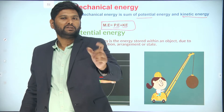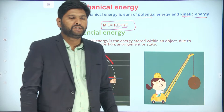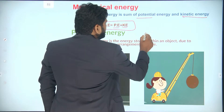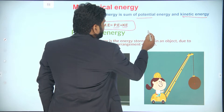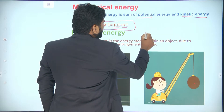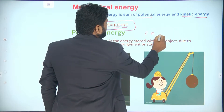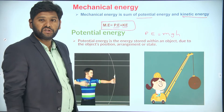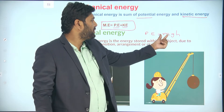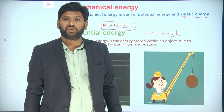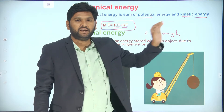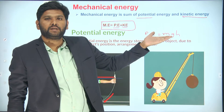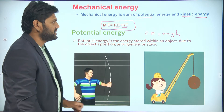Now I will write an important formula for potential energy — that is called gravitational potential energy. The gravitational potential energy formula is mgh. M means mass, g means acceleration due to gravity, h means height. So because of the height, an object possesses energy — that is known as gravitational potential energy.